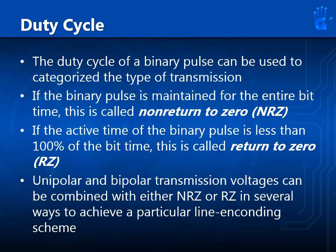The duty cycle of a binary pulse can be used to categorize the type of transmission. If the binary pulse is maintained for the entire bit time, this is called non-return to zero, or NRZ. If the active time of the binary pulse is less than 100% of the bit time, this is called return to zero, or RZ. Unipolar and bipolar transmission voltages can be combined with either NRZ or RZ to achieve a particular line encoding scheme.